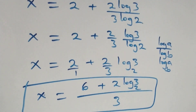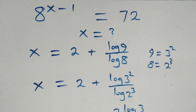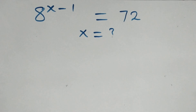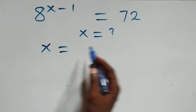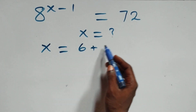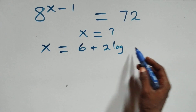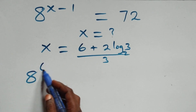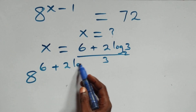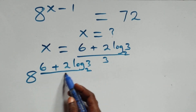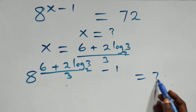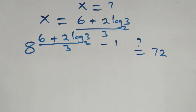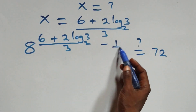Let's verify: we substitute the value x equals (6 plus 2 log 3 base 2) all over 3 back into the original problem. What we get is 8 raised to the power of (6 plus 2 log 3 base 2) all over 3, minus 1, is equal to 72 on this side.